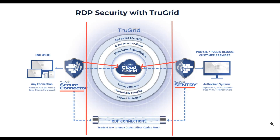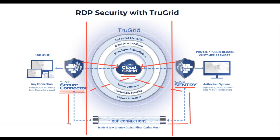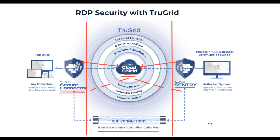After a user is duly authenticated, Cloud Shield fetches their assigned remote desktops and apps and displays them inside the Secure Connector. When the end-user clicks to connect to a remote desktop or app, Cloud Shield automatically creates a connectivity mesh between the end-user and the remote system. The RDP connection is created over TrueGrid fiber optics nodes, which are located globally. TrueGrid uses the nodes closest to the end-user and remote system, thereby bypassing internet congestion and assuring a low-latency connectivity experience.